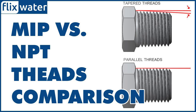MIP and NPT fittings thread into different ports. For every MIP and NPT fitting, there is a corresponding female port that receives the fitting, which creates the seal between pipes. The threads on MIP fittings screw into the threads of a FIP, or female iron pipe, fitting whose threads are hidden inside. On the other hand, NPT threads fit inside FNPTs, or female national pipe taper threads.